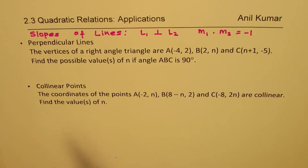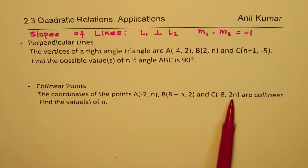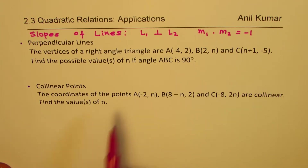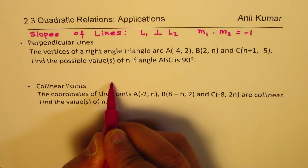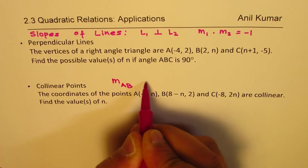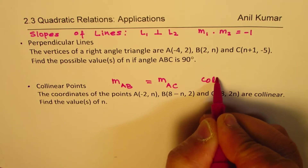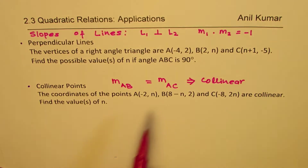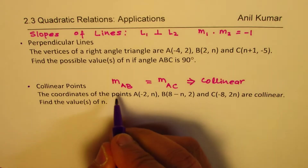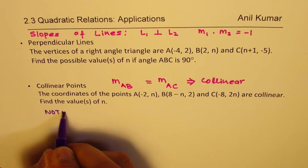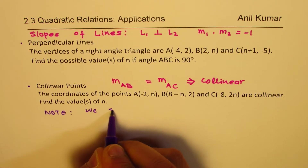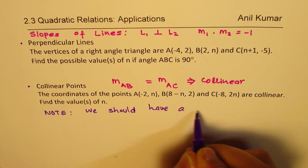The second question is regarding collinear points. We are saying the coordinates of points A, B, C are collinear — find the value of N. When we say collinear points, using the concept of slope of line, we can find collinear points. If the slope of a line from A to B is the same as the slope from A to C, then they are collinear. It is very important to have a common point when finding slope.